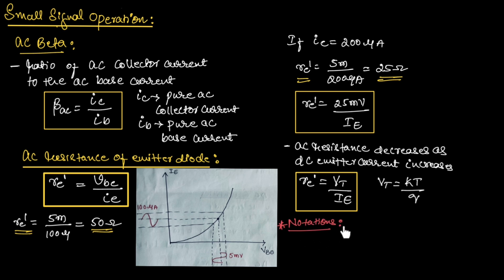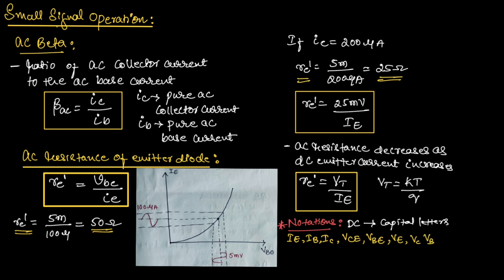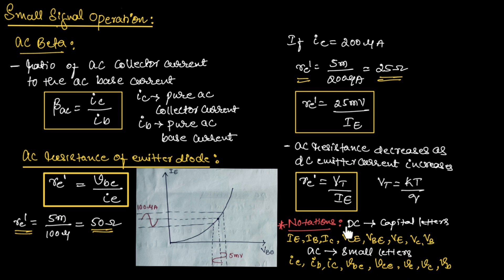You need to remember some notations while studying the subject. For DC quantities, we use capital letters such as IE, IB, IC, VCE, VBE, VE, VC, VB, and so on. For AC quantities, we use small letters — for example, small ie, small ib, small ic, small vBE, small vCE, small vE, small vC, and small vB, and so on. These notations are very important to remember.